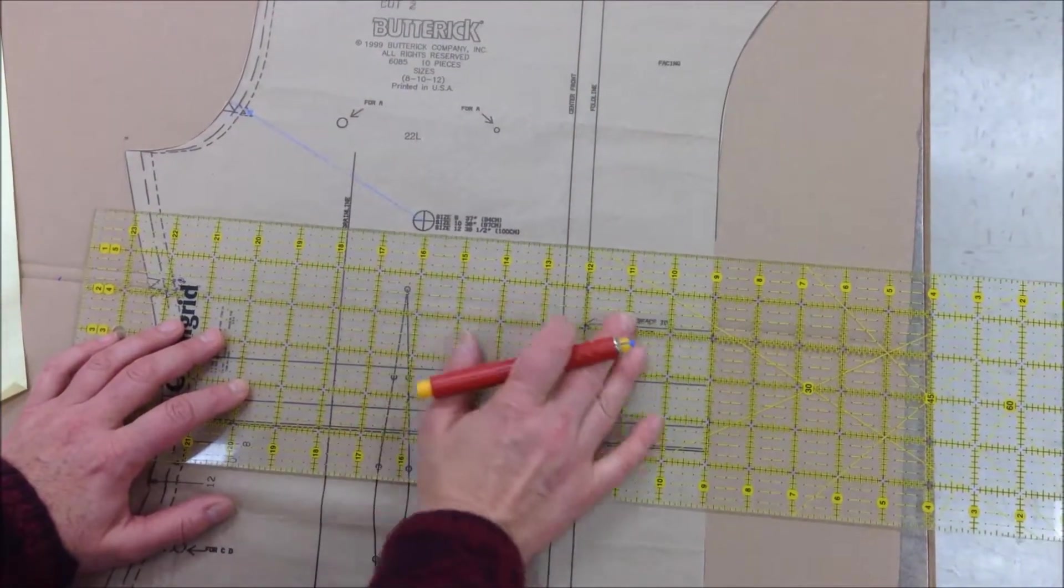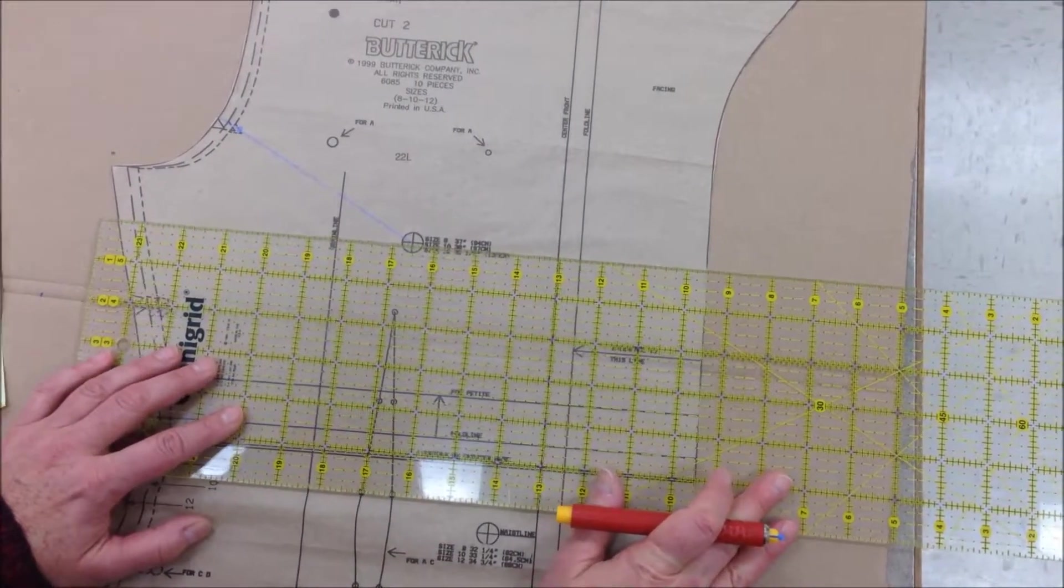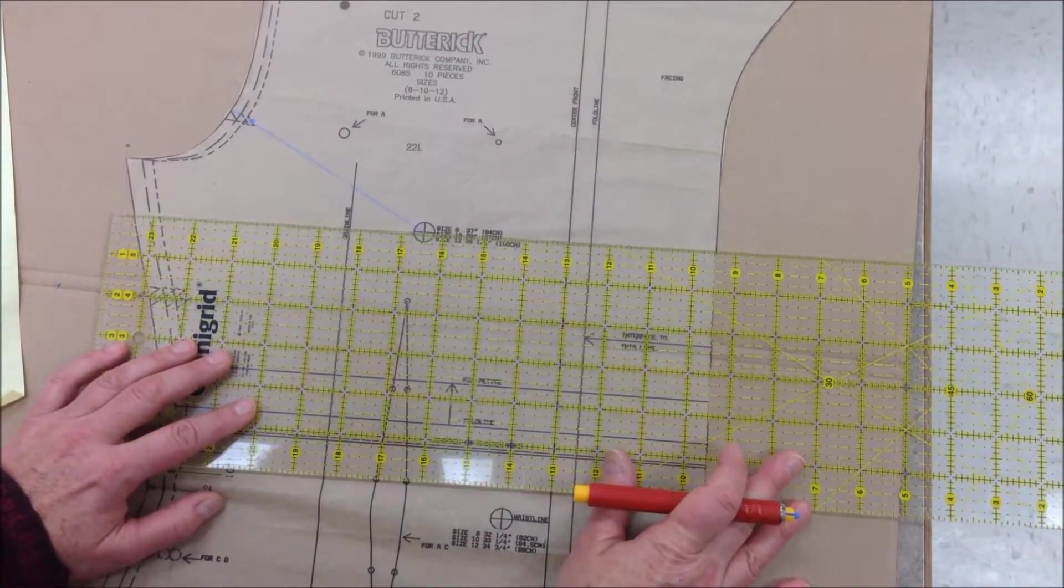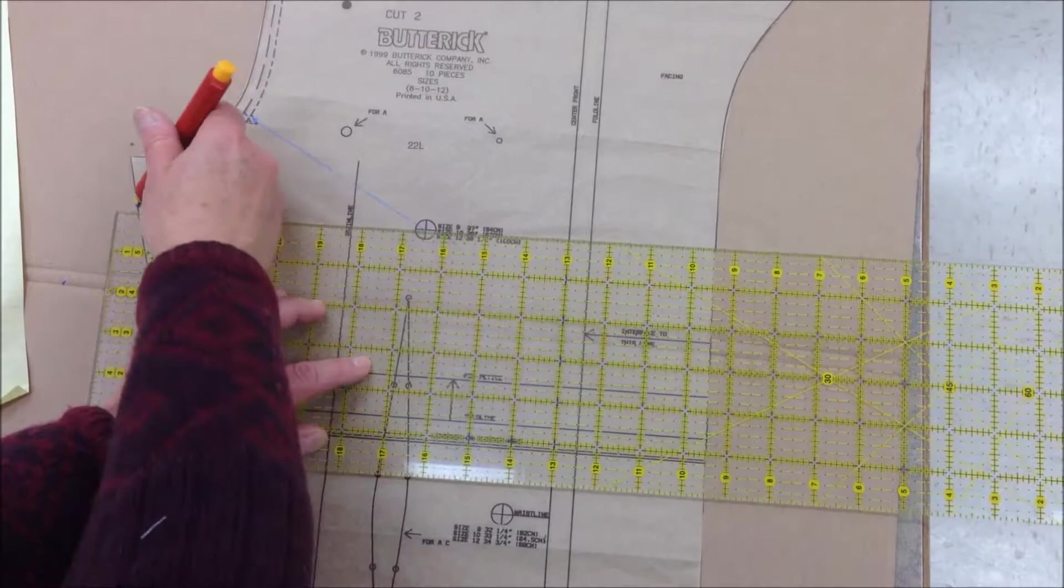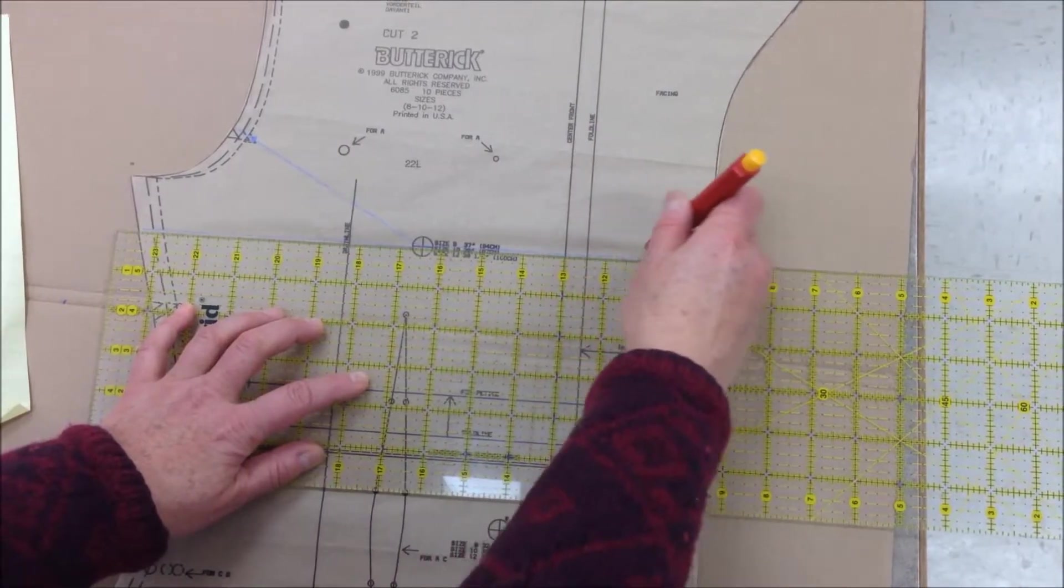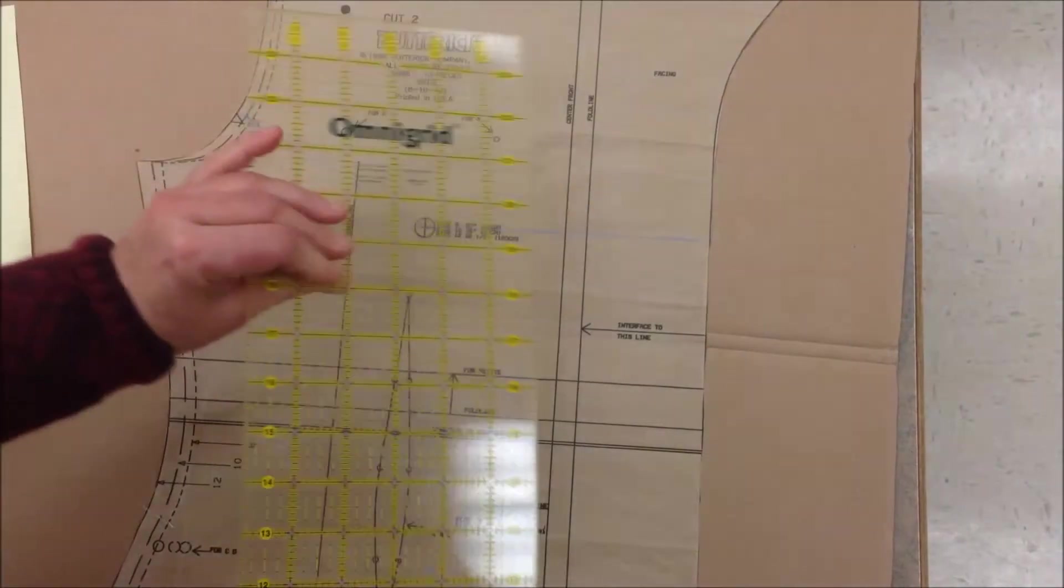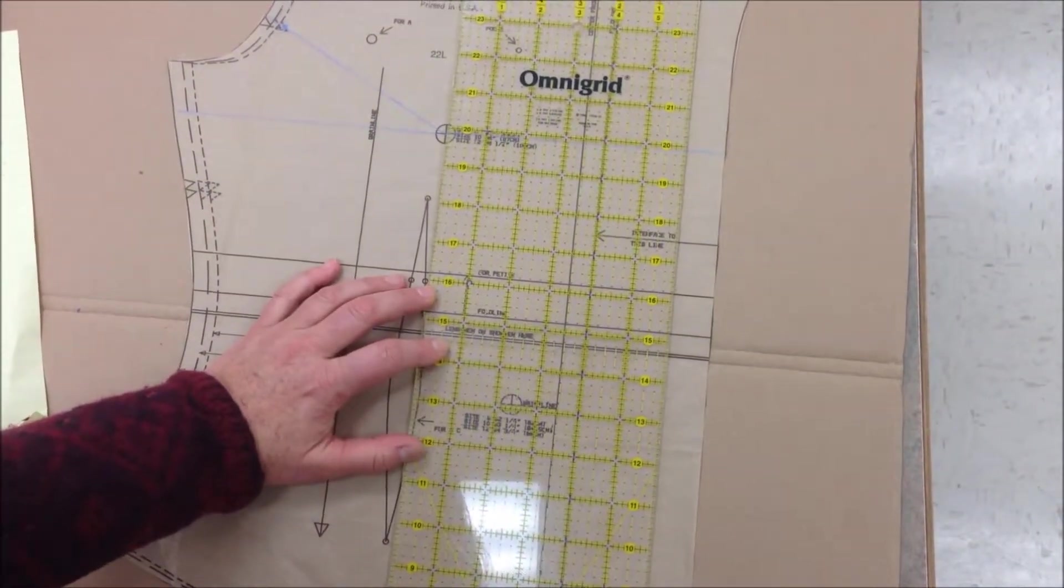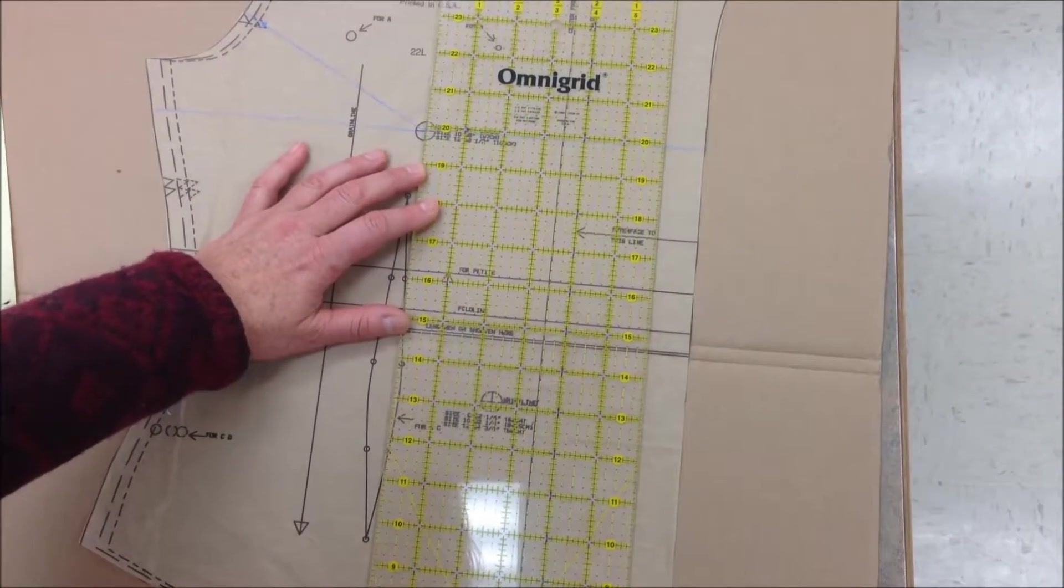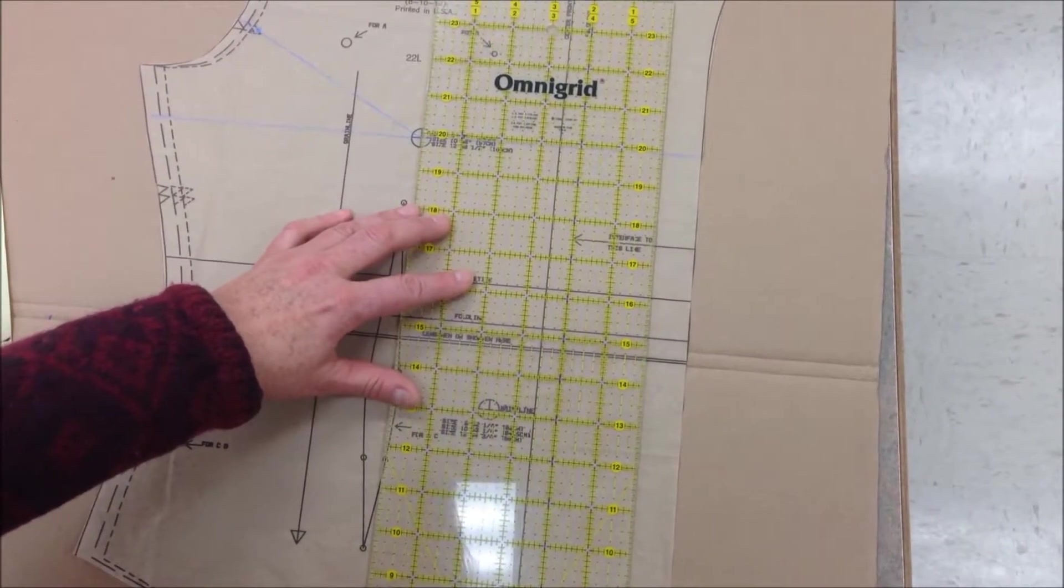Now we come perpendicular to our grain line right through the bust apex. Line everything up and draw a line from the side. That's number 2 and then we're going to continue it all the way to the facing front here. That makes it number 3. And then number 4 is parallel to the grain line right through the apex. This one doesn't happen to line up through the waist dart but that's okay. We want to put it through the bust apex.